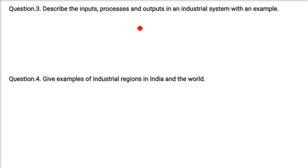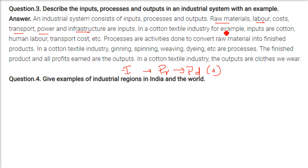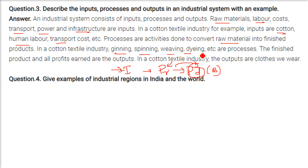Describe the inputs, processes, and outputs of an industrial system. An industrial system consists of inputs, processing, and outputs. Inputs include raw materials, labor, costs, transport, power, and infrastructure. In the cotton textile industry, inputs are cotton, human labor, and transport costs. Processes are the steps taken to convert raw materials into a final product — in cotton textiles, these are ginning, spinning, weaving, and dyeing. The output is the finished product and profits — in the cotton textile industry, the output is the cloth we wear.